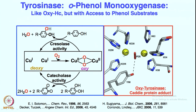The copper center and the 3-histidine ligands position the phenol over the copper peroxo intermediate. The phenol gets oxygenated at the ortho position to give catechol. If catechol is used as a substrate, it can react further with this peroxo intermediate to give the quinone product. The first activity — phenol to catechol formation — is called cresolase activity, and catechol to quinone formation is called catecholase activity.